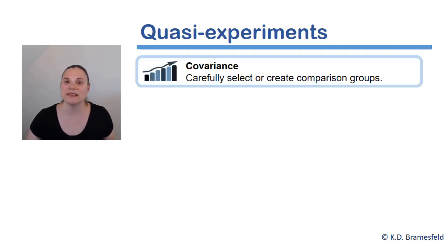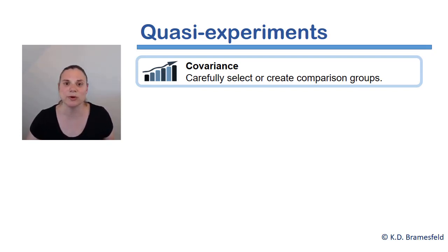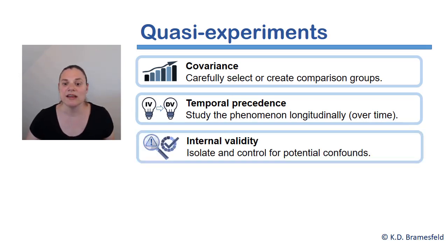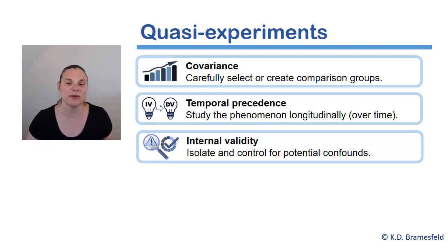A quasi-experimental design is a design that manually attempts to meet all three conditions of causality. For example, a quasi-experimental design might carefully select or create comparison groups in order to create ideal conditions for examining covariance. A quasi-experimental design might study a phenomenon over time, or longitudinally, in order to establish temporal precedence. And a quasi-experiment might try to isolate and control for potential confounds. So even when random assignment to conditions is not possible, there are still some steps that researchers can take to attempt to increase the internal validity of their research findings.